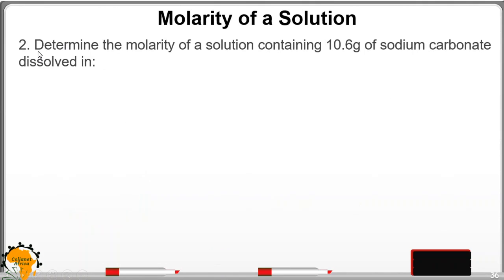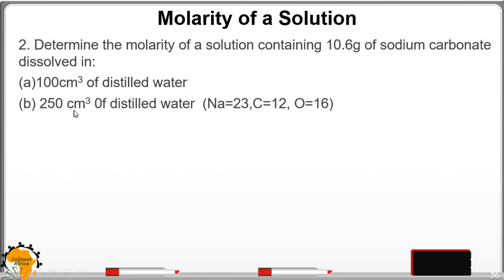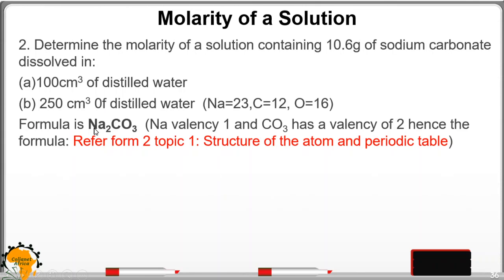In the second example, determine the Molarity of a solution containing 10.6 grams of sodium carbonate dissolved in: A) 100 cm³ of distilled water, and B) 250 cm³ of distilled water. The formula of sodium carbonate is Na₂CO₃ — since the valency of carbonate is 2 and sodium is 1, they interchange to give that formula. A link to the relevant topic on atomic structure and the periodic table will be provided below the video.